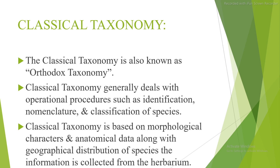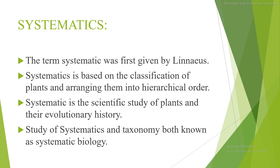Classical taxonomy, also known as orthodox taxonomy, generally deals with operational procedures such as identification, nomenclature, and classification of species. It is based on morphological characters and anatomical data along with geographical distribution of species, with information collected from herbarium. Systematics, a term first given by Linnaeus, is based on classification of plants arranged in hierarchical order and is the scientific study of plants and their evolutionary history. Together, systematics and taxonomy are known as systematic biology.